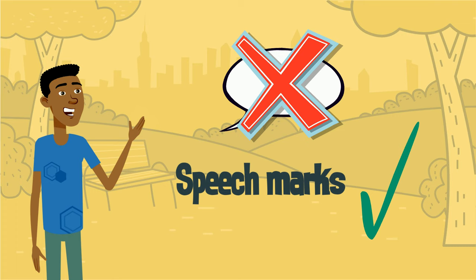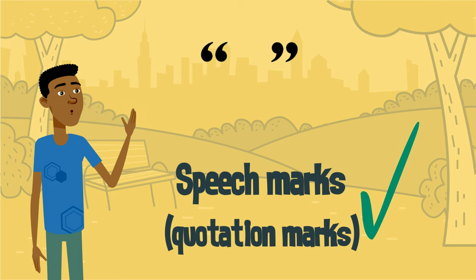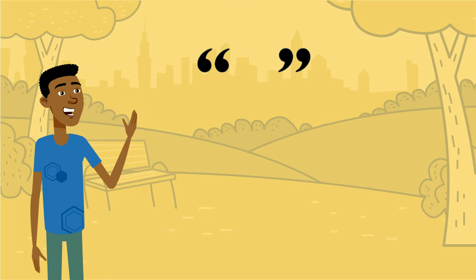Speech marks are also known as quotation marks, and they can look like this or like this. Just like speech bubbles, speech marks are used to show exactly what was said. Anything inside a set of speech marks is the direct speech.